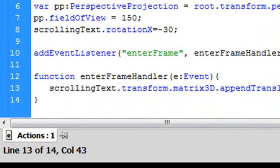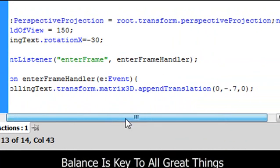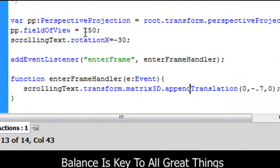And basically what Jun does is he creates a text box and he pastes a bunch of text in it and he turns it into a movie clip. And then he names that movie clip Scrolling Text. And pretty much what he's going to do is create a perspective projection. And from that perspective projection, he's going to set a field of view. And then he's going to take this text box that he's created and he's going to rotate it minus 30 degrees and do an on-enter frame. And each on-enter frame, he's going to prepend translation. You don't want to append.